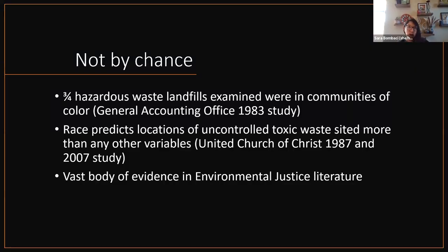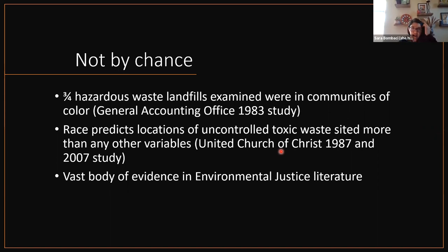This pattern is not by chance. A strong distributional justice and environmental justice literature documents how different communities are disproportionately burdened by these issues. A General Accounting Office study found that three out of four hazardous waste landfills were in communities of color. The United Church of Christ studies from 1987 and 2007 provided consistent evidence that race was the strongest predictor of where uncontrolled toxic release sites would be located — a much stronger predictor than other variables.